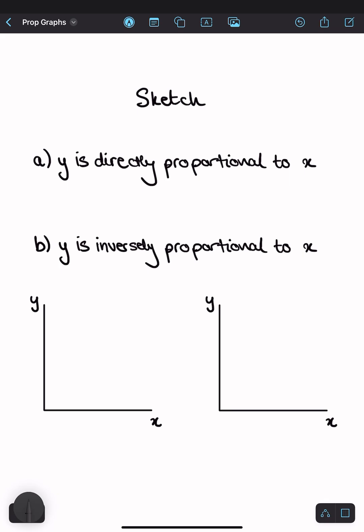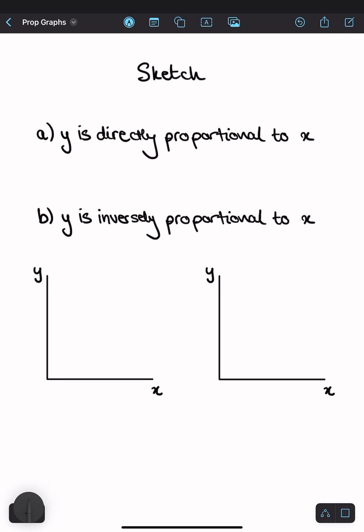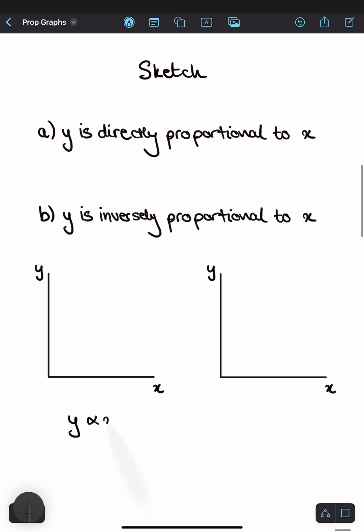So part A, sketch y is directly proportional to x. If we write that out, that would look like y is proportional to x, which means that y is equal to k lots of x where k is any constant.